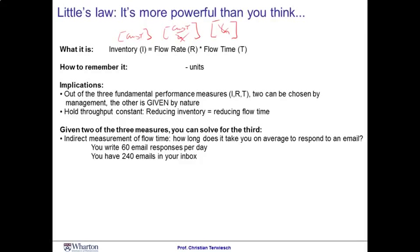What are the implications of Little's Law? First of all, Little's Law tells us that from the three fundamental performance measures — inventory, flow rate, and flow time — two of them you might be able to adjust, but the third one is determined by nature. For example, if you hold the flow rate fixed — that's your revenue, the number of customers you serve — Little's Law tells us that whatever you do to inventory, you're doing to flow time.